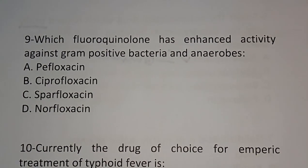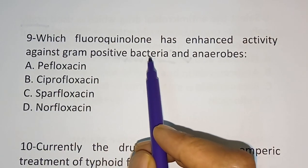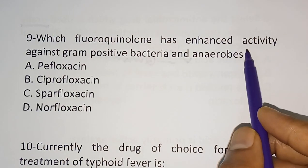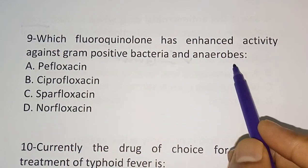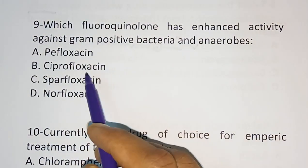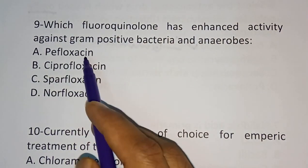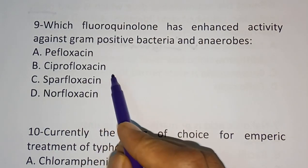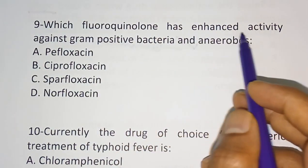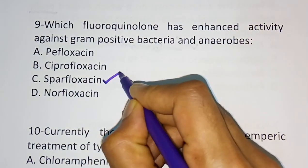Question nine: which fluoroquinolone has enhanced activity against gram-positive bacteria and anaerobes? Options are: pefloxacin, ciprofloxacin, sparfloxacin, norfloxacin. The correct answer is sparfloxacin, which has enhanced activity against gram-positive bacteria and anaerobes.